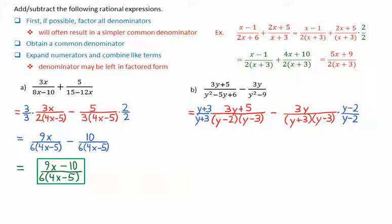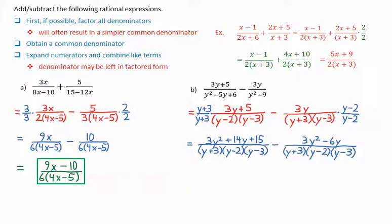We then expand the numerators. For the first one, we use FOIL, giving 3y squared plus 14y plus 15 over the common denominator. For the second, 3y times y minus 2 gives 3y squared minus 6y. Finally, we combine like terms: 3y squared minus 3y squared cancels out, 14y minus negative 6y gives 20y, and we have one constant from the first expression. This gives 20y plus 15 over the common denominator of y plus 3 times y minus 2 times y minus 3.